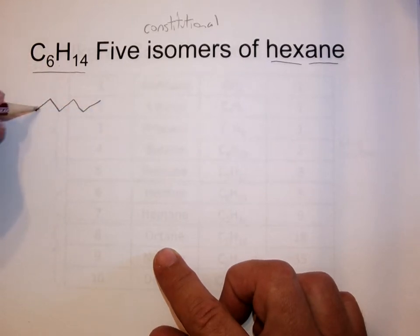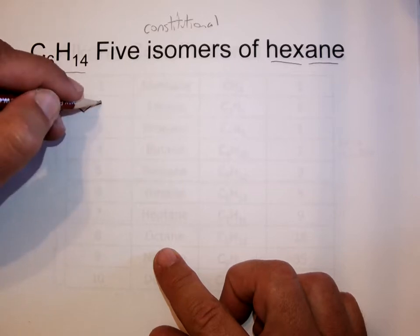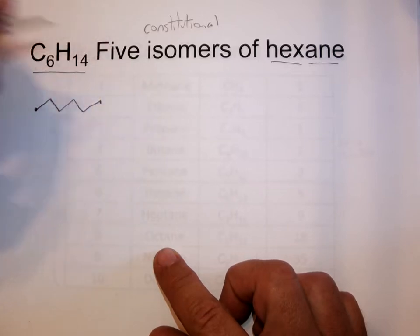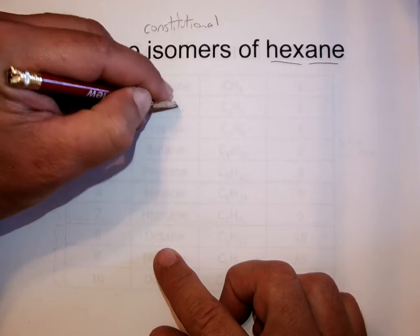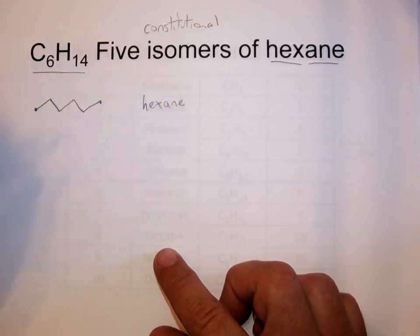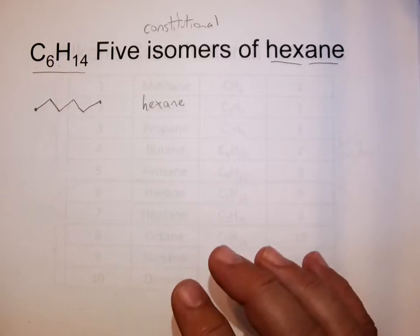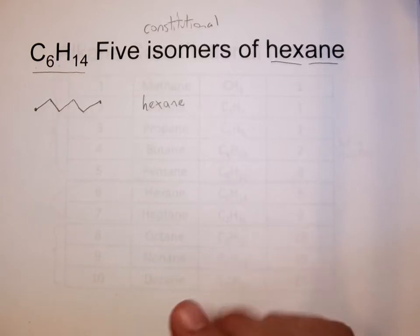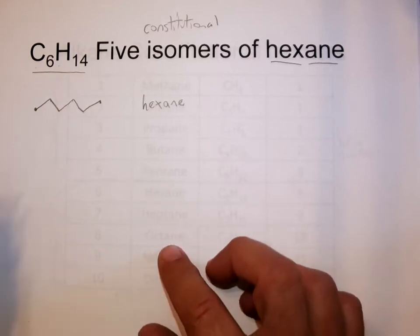So one, two, three, four, five, six carbons in a row. That would be just hexane itself — the parent compound, simple and straightforward. Everybody should get the first isomer of hexane: just put six carbons in a row.